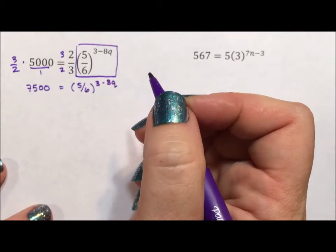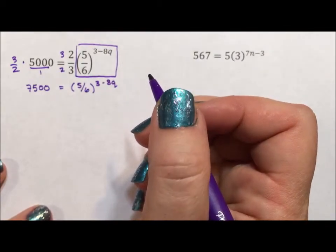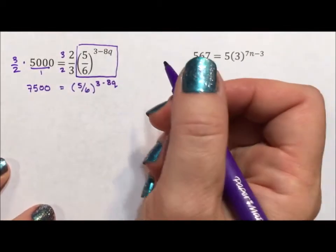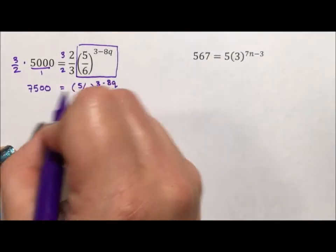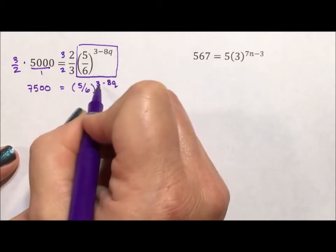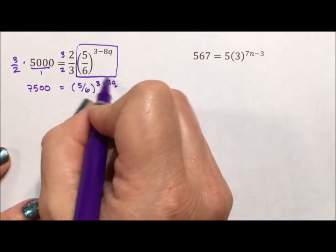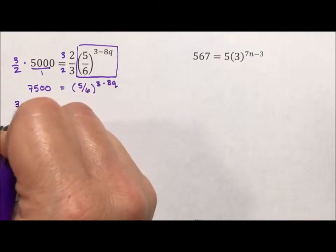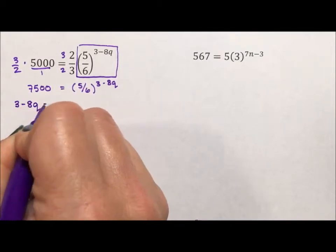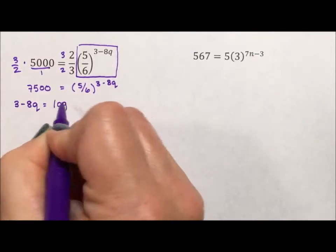So what I'm going to do next is I am going to rewrite this logarithmically. And the way I'm going to do that is I'm going to say an exponent is a log. So if I want to rewrite this as a log, I start with the exponent. Exponent 3 minus 8q equals log, because logs are exponents.